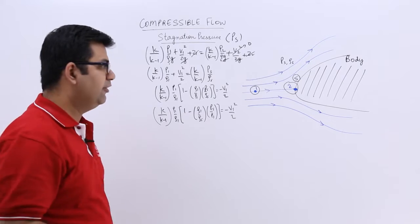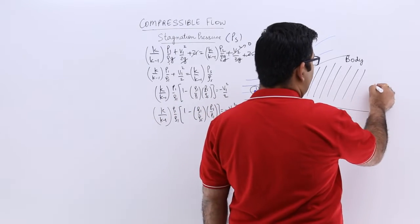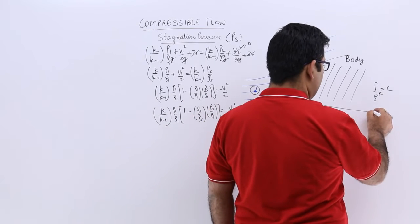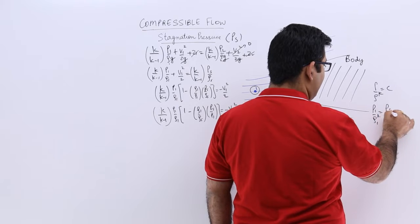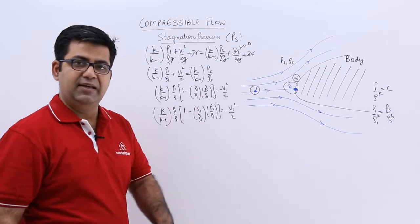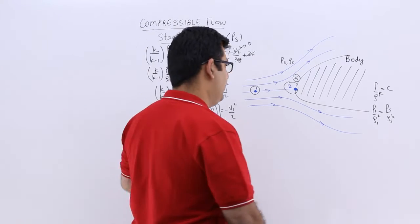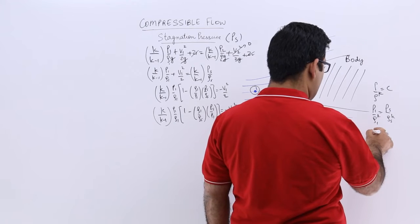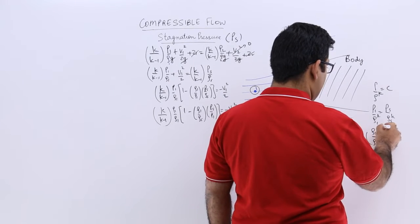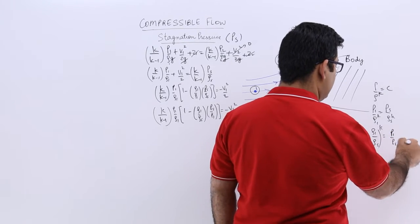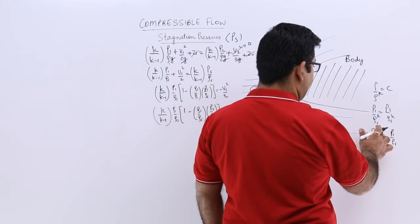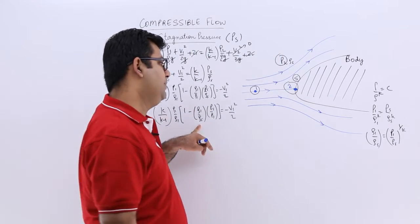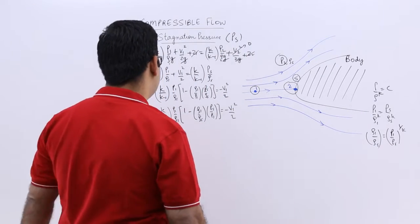Now let us assume adiabatic flow. For adiabatic flow, the relation between pressure and density is p by ρ^k equals constant, so p1 by ρ1^k equals ps by ρs^k. We need the value of ρ1 by ρs because we need to find ps. From the adiabatic relation, ρ1 upon ρs to the power k equals p1 upon ps. Removing the power from the densities, ρ1 by ρs equals p1 by ps to the power 1 by k, or equivalently ps by p1 to the power minus 1 by k.